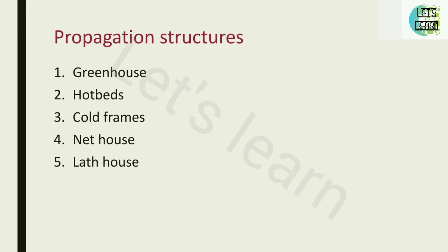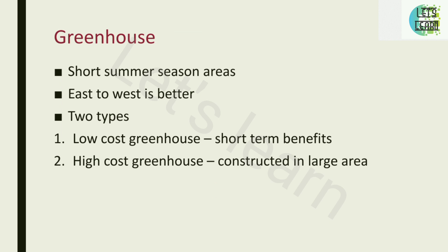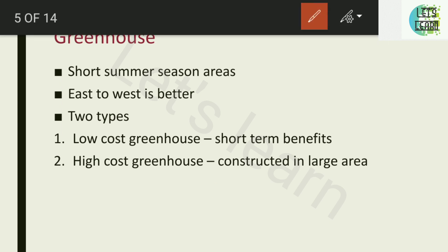The most commonly used protected structures are: greenhouse, hotbed, cold frame, net house, and lathe house. First, we will learn about the greenhouse. The greenhouse is most commonly used in short summer season areas — that means areas with more winter and spring season. The greenhouse structure is used in such areas and can be constructed in an east-to-west direction, which is the better placement.